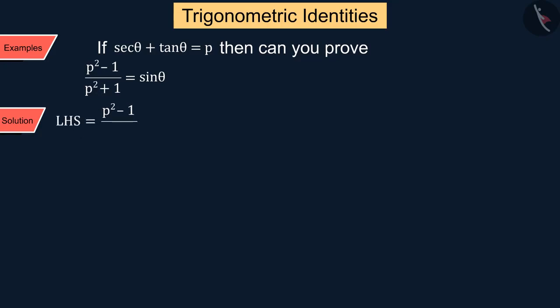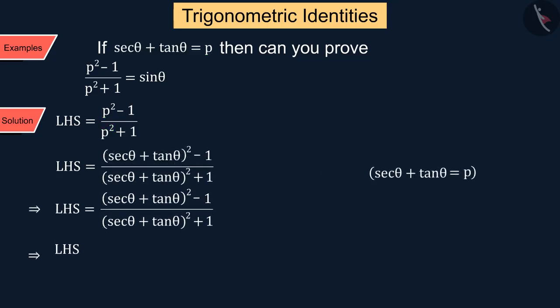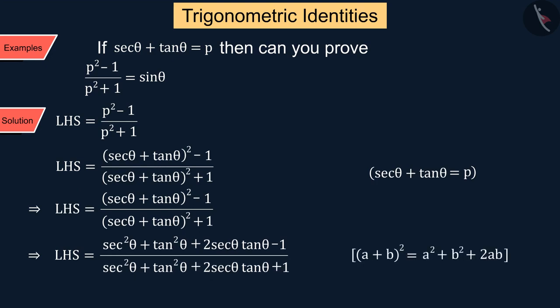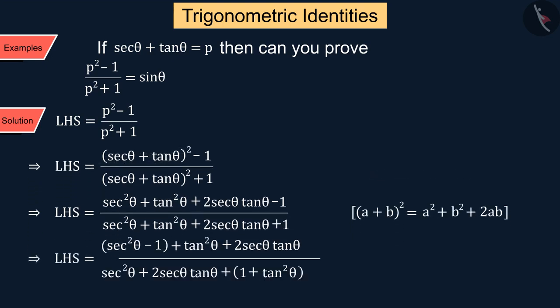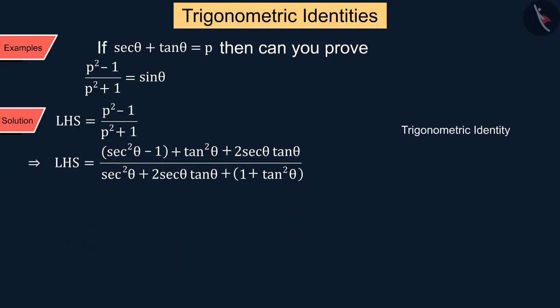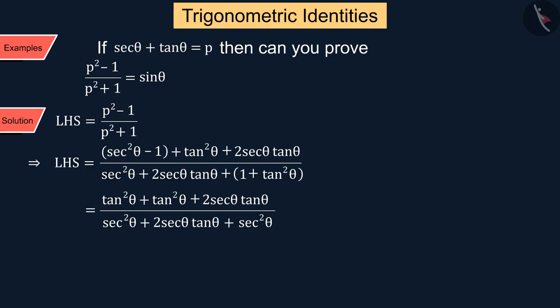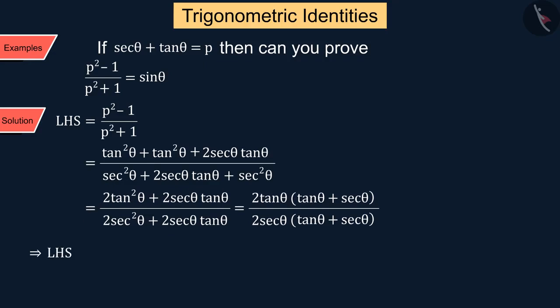According to the given information, p is replaced by sec θ + tan θ, from which we get the following equation which we write as follows. In this equation, using the trigonometric identity 1 + tan²θ = sec²θ, after solving we obtain tan θ/sec θ.